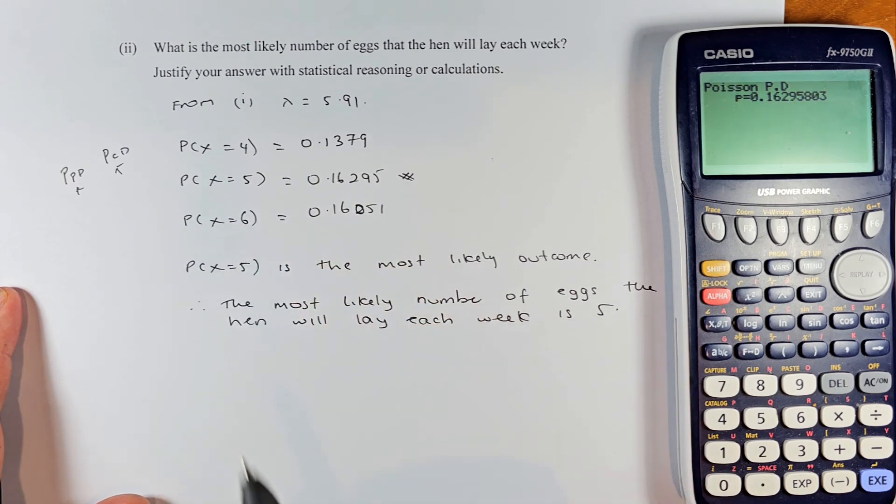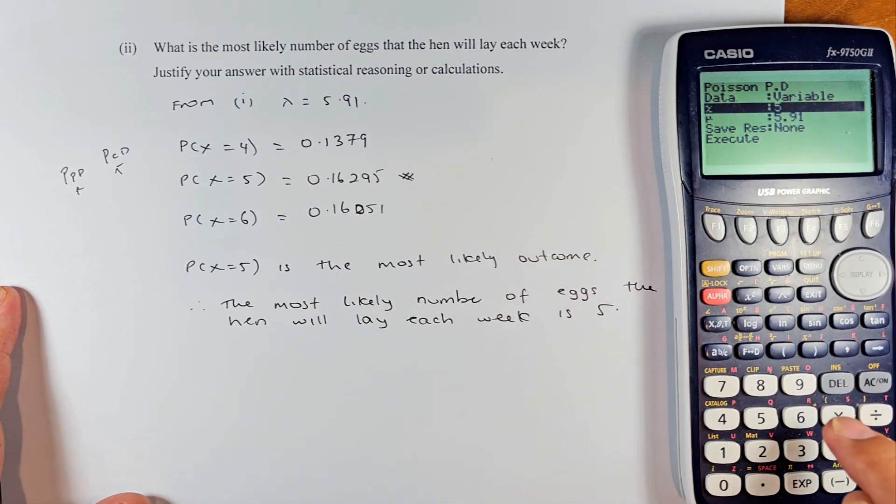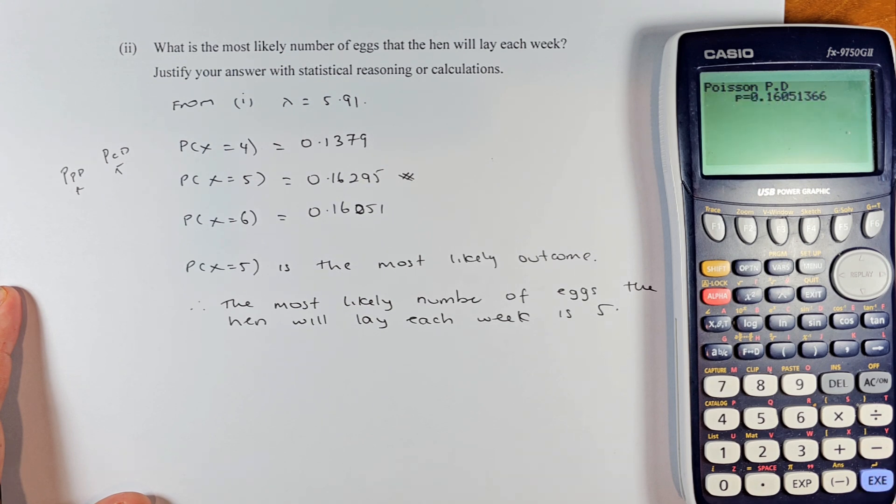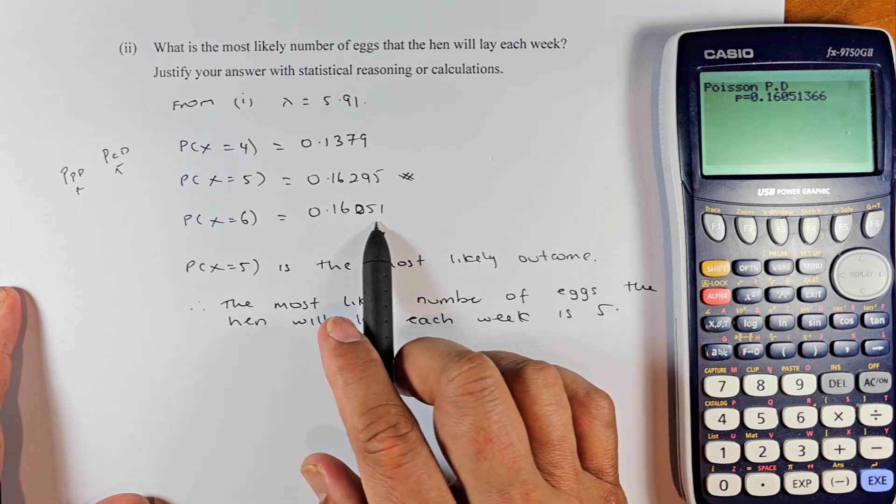We have to do when x equals 6. Same thing, we're going to exit. Once we exit that number, we're going to change x to 6. Everything else remains the same. Press execute. The answer is 1-6-0-5-1.